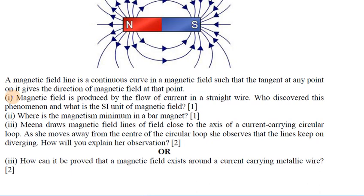Magnetic field is produced by the flow of current. The phenomenon was discovered by Oersted. The SI unit of magnetic field is the Oersted.